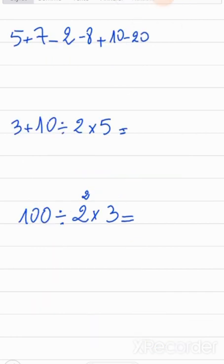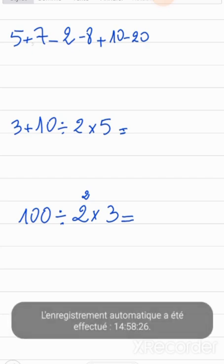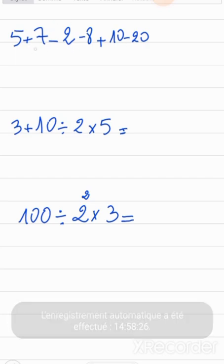Let's take a few more examples. If we have only addition and subtraction, they stand at the same rank, so we can start from left to right. In this case there's no problem — we can start by adding or subtracting. But if you change the order of the terms, each term must keep its own sign. I can regroup these, starting by adding.